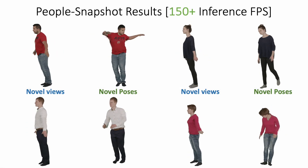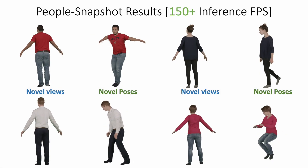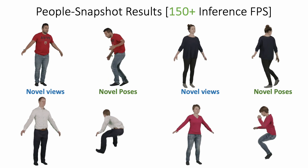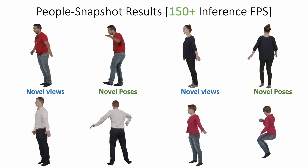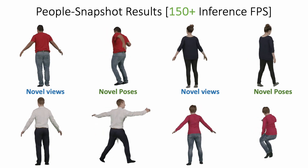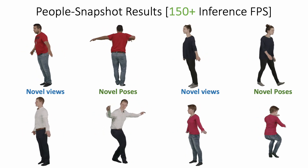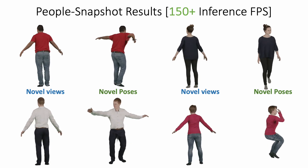Here are the results on People Snapshot. Note that on a laptop, our model can be fitted in under 30 seconds and inference can achieve more than 150 fps.